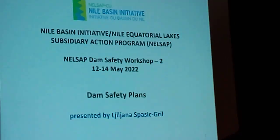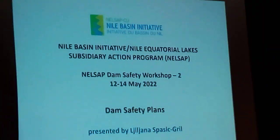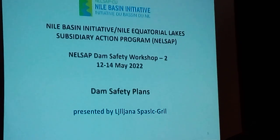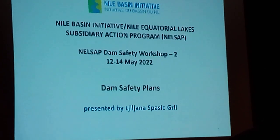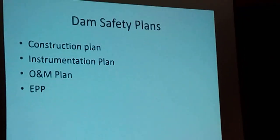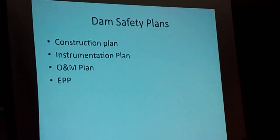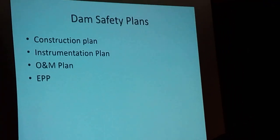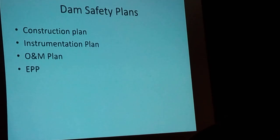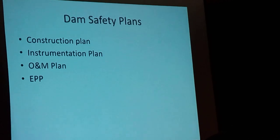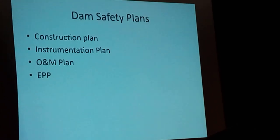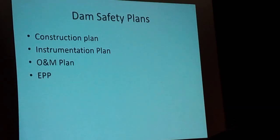Now I'm going to talk about dam safety plans, which are required if projects are going to construction. Normally there are four dam safety plans: construction plan, instrumentation plan, operation and maintenance plan, and emergency preparedness plan. I'm not going to talk too much about the construction plan — most of us know what goes into construction planning: the drawings, the resources, and the program. I'm going to focus on the instrumentation plan and the EPP.